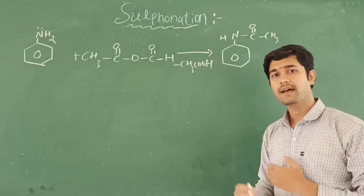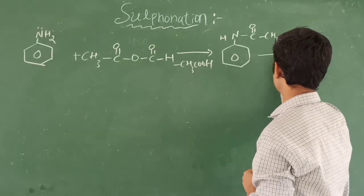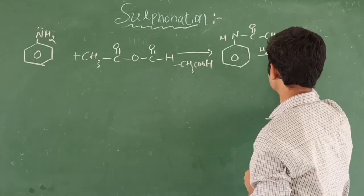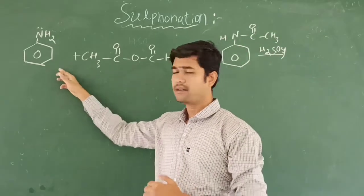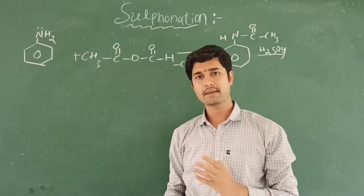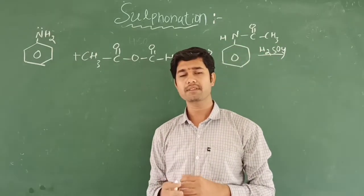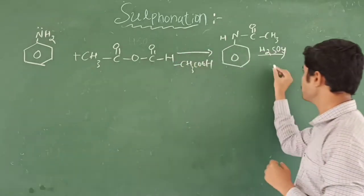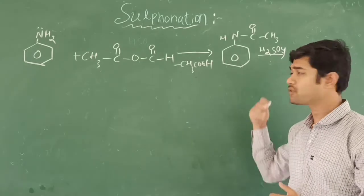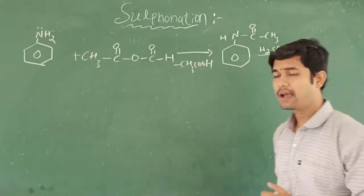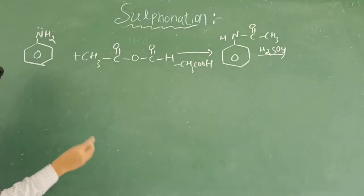When we write SO₃H or H₂SO₄ we need to understand how the electrophile is generated. You know that anhydride is always more reactive towards electrophilic substitution reactions. So how is the electrophile SO₃H⁺ generated and how does it attack? Let's see the generation of the electrophile. I'm going to write the structure of sulfuric acid.